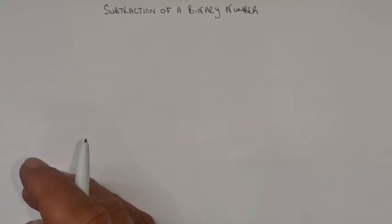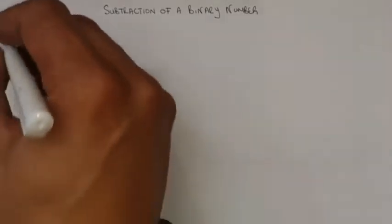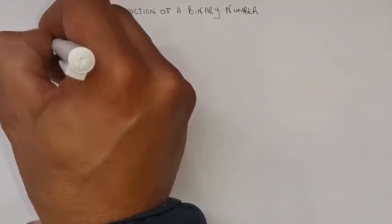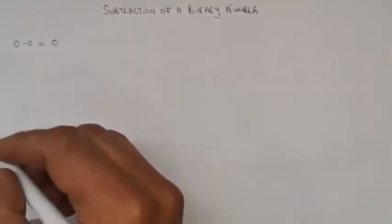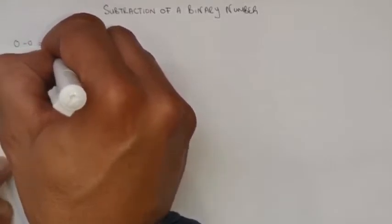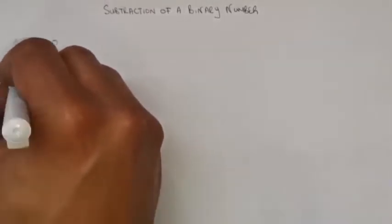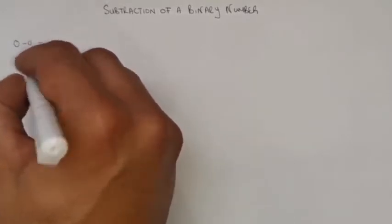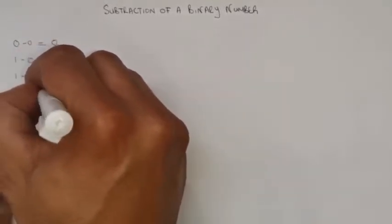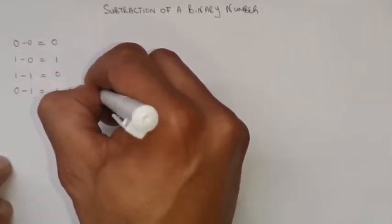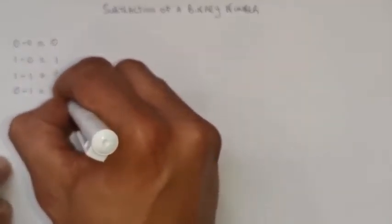First of all, we must write down our rules for subtracting binary numbers. The rules are: 0 minus 0 equals 0; 1 minus 0 equals 1; 1 minus 1 equals 0; and 0 minus 1 equals 1, with 1 borrowed.